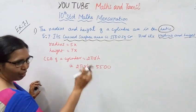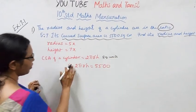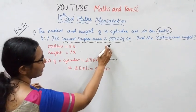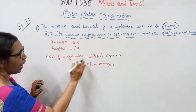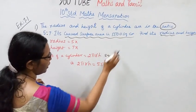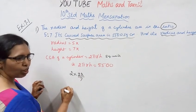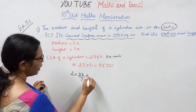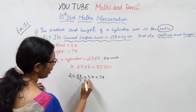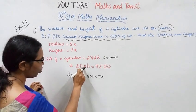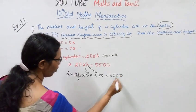CSA of a cylinder equals 2πrh. Substituting: 2 × (22/7) × 5x × 7x = 5500. The 7 in the denominator cancels with 7x, giving 2 × 22 × 5x × x = 5500, which simplifies to 220x² = 5500.